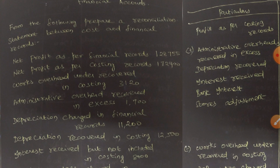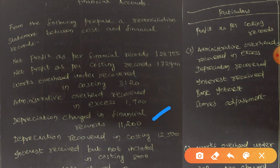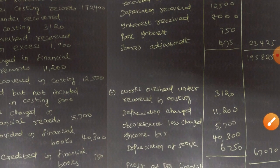The next item is depreciation charged in financial records: 11,200. Charged means you are incurring an expenditure. Although our base is costing records and this figure is from financial records, whatever happens in financial records must also be reflected in costing records. Since depreciation charged is an expenditure, you deduct 11,200 from your costing records.